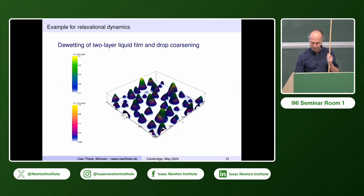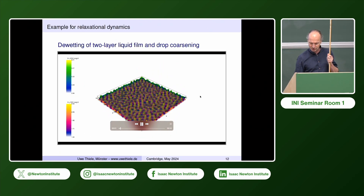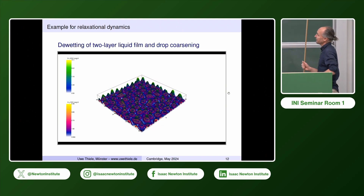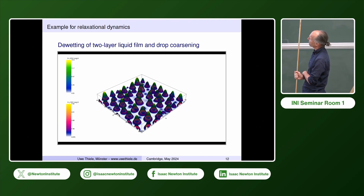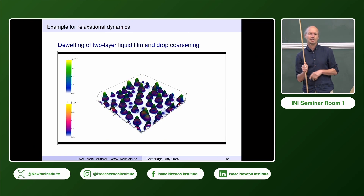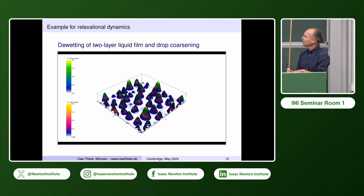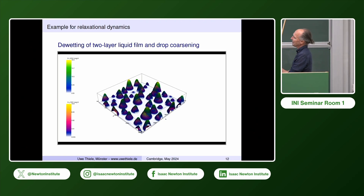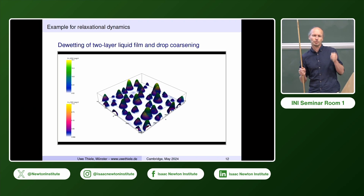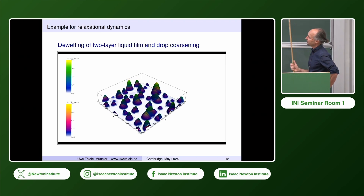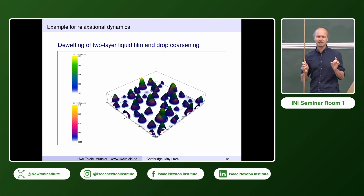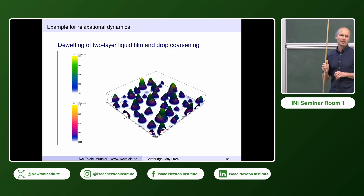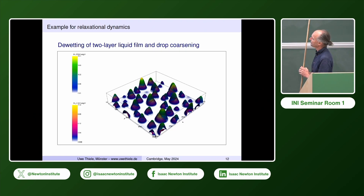A typical example is a simulation we did for a two-layer liquid film that dewets. You first get evolution of droplets by dewetting, then coarsening on a long timescale. This would be a typical aggregation process, and it describes the level of numerics we can now do on a personal computer without big computers, though it is a rather long simulation because for thin film models the mobilities are power laws, which makes these models harder to simulate than simpler phase-field models.